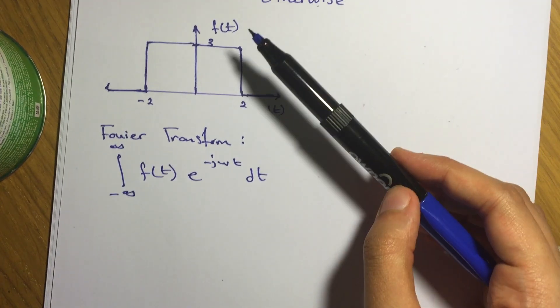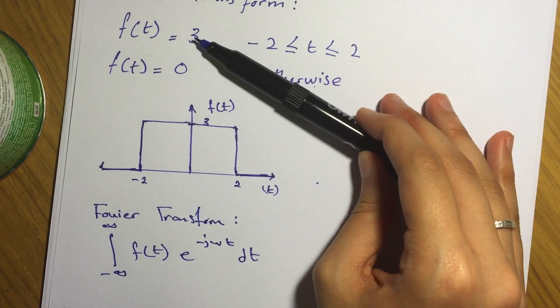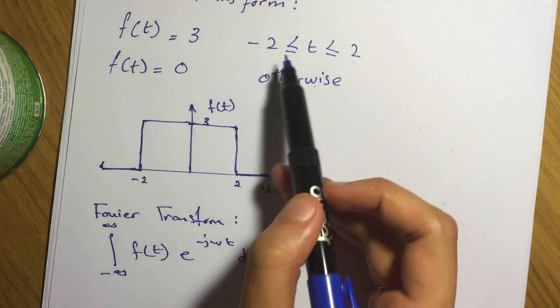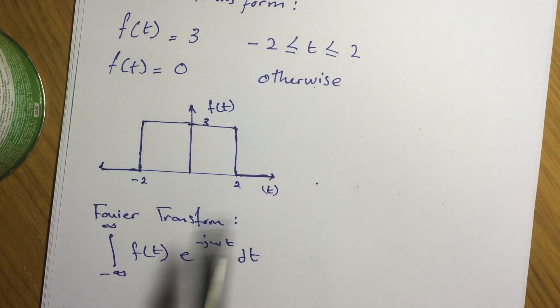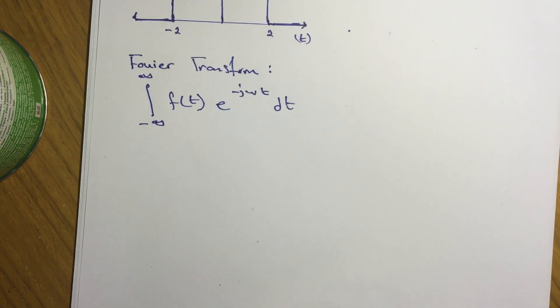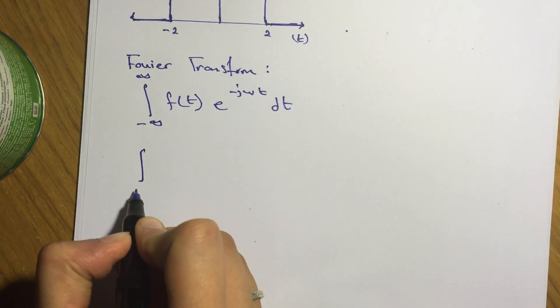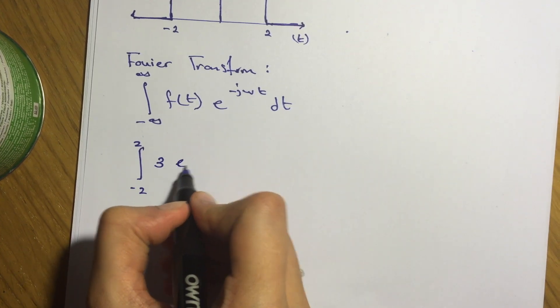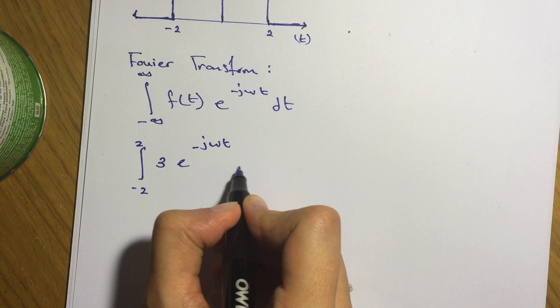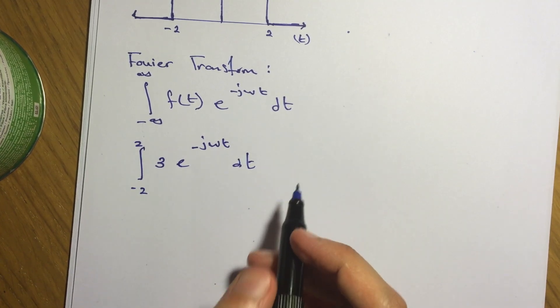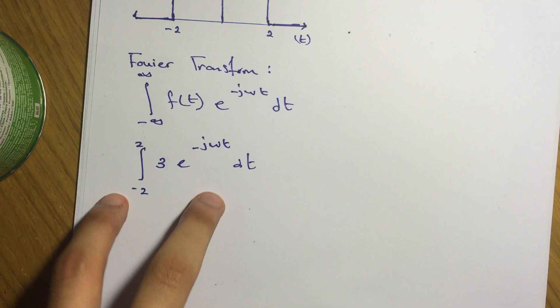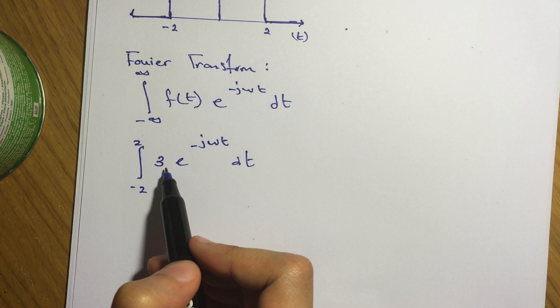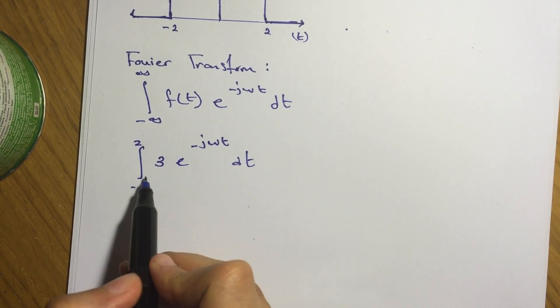We basically apply what we have here, the givens. So f of t is 3, so we substitute here. And then we have the limit is negative 2 to 2, so apply the limits here. So negative 2 and 2, f of t is 3, and e to the negative j omega t dt. So here you just simply integrate this. Three is a constant so it goes up.